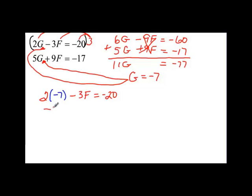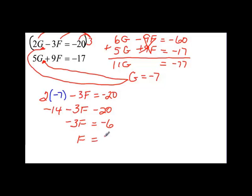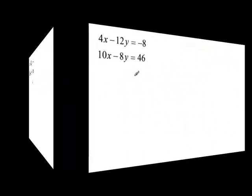So this is negative 14 minus 3f is equal to negative 20. Adding 14 to both sides, I get negative 3f is equal to negative 6, because negative 20 plus 14 gives negative 6. Dividing by negative 3, negative 6 divided by negative 3 is going to be positive 2. So now I know that my answers are f equals 2 and g equals negative 7.